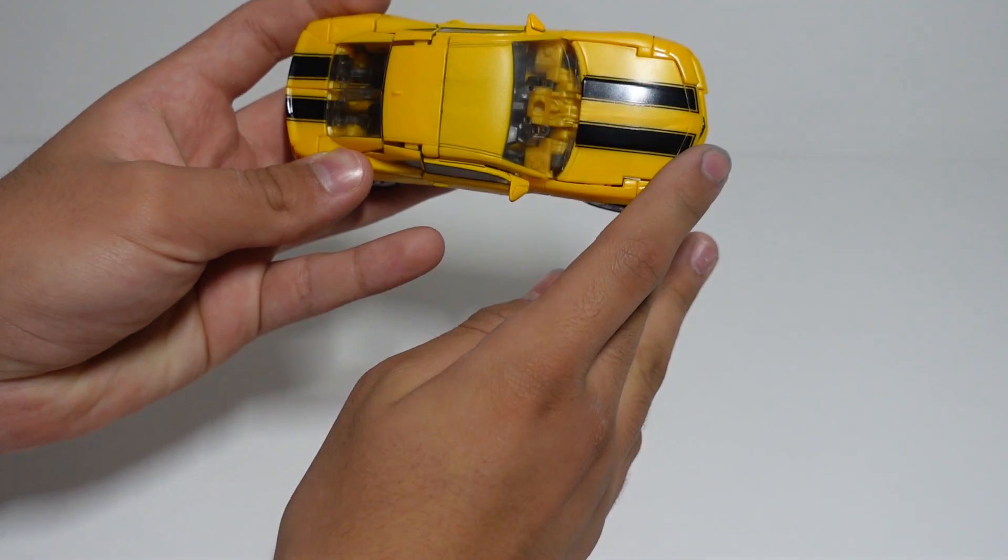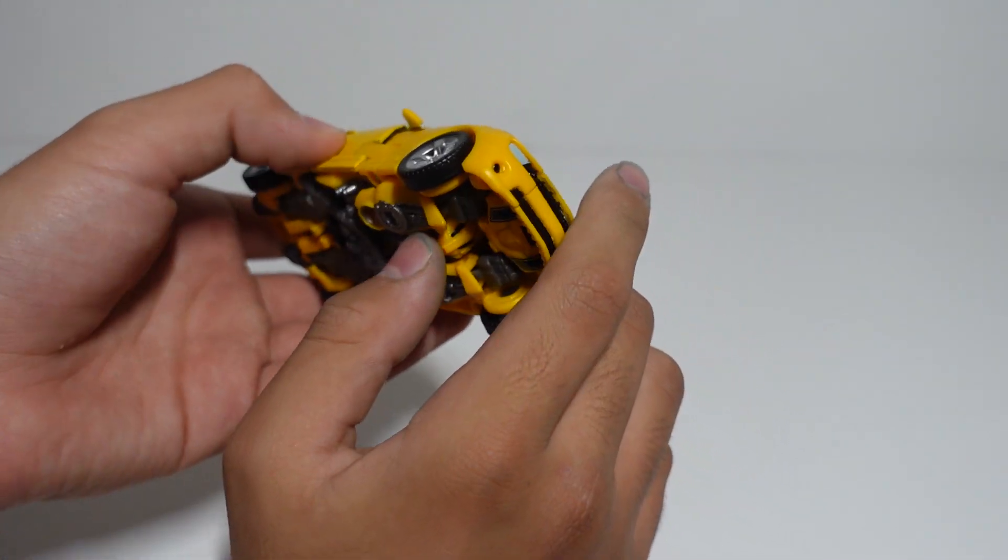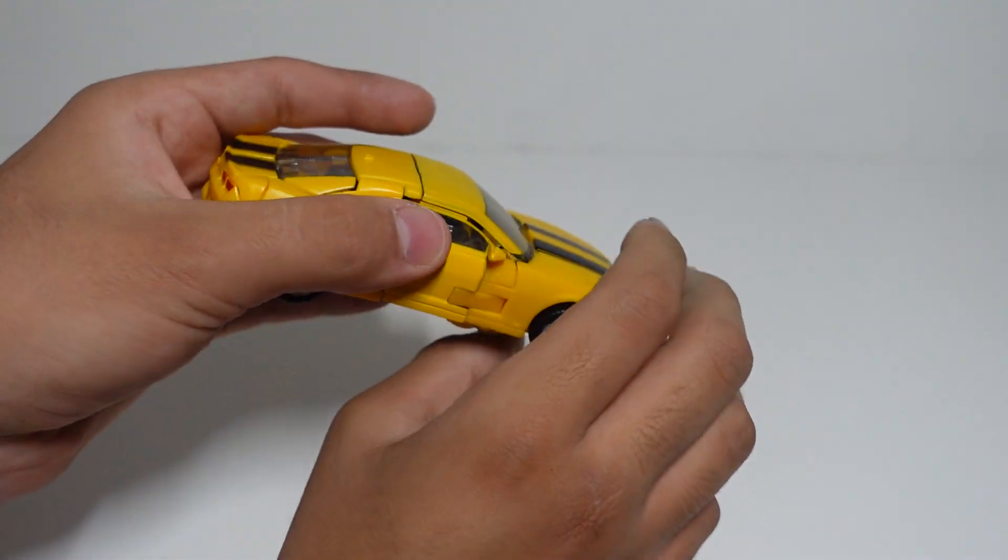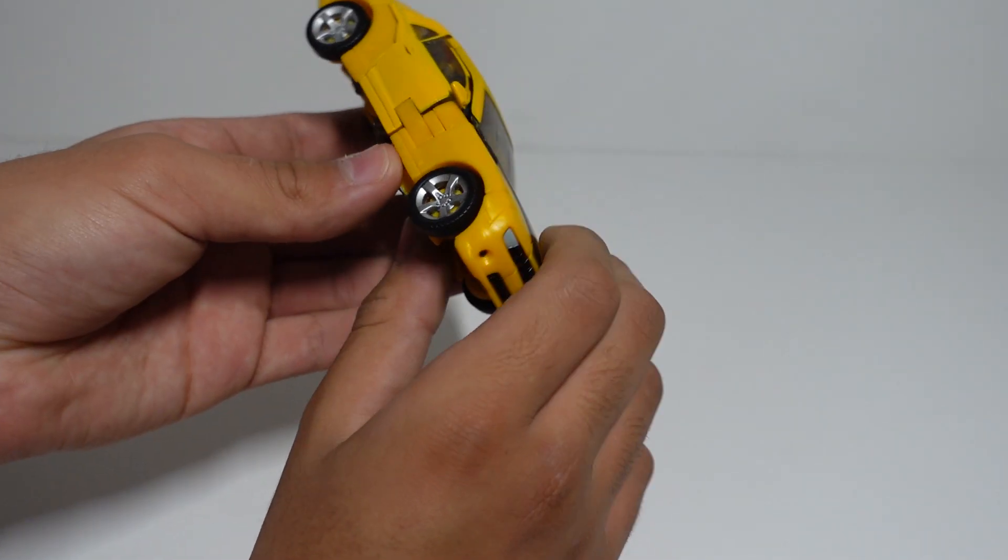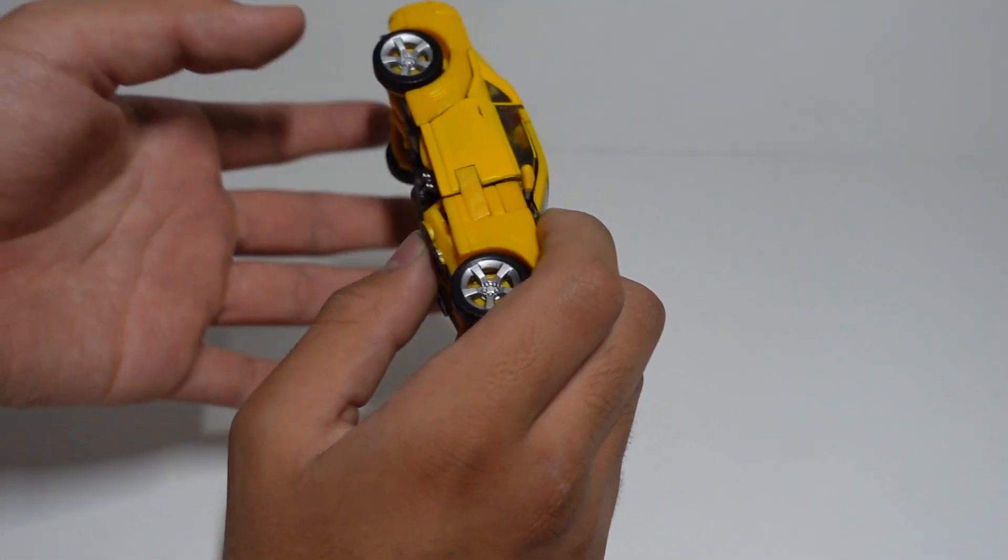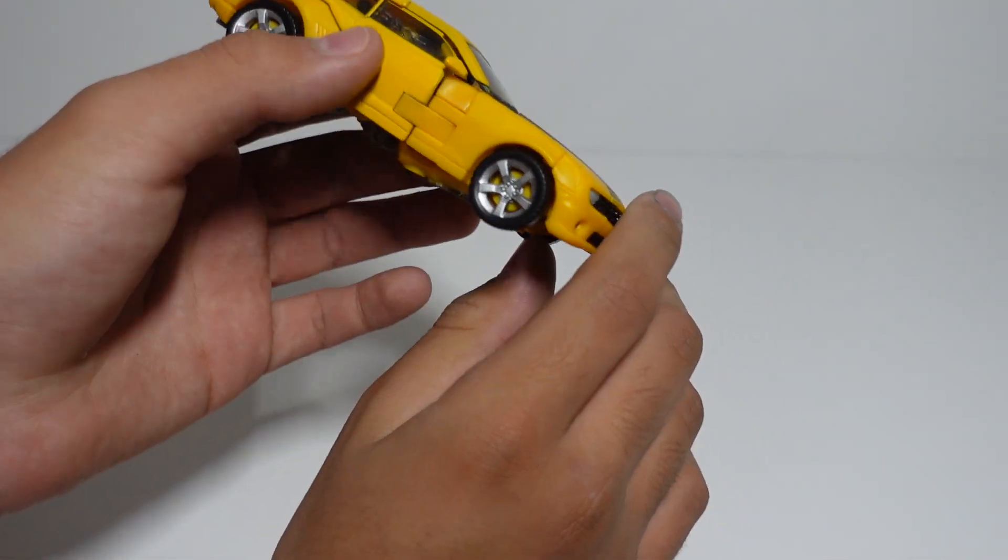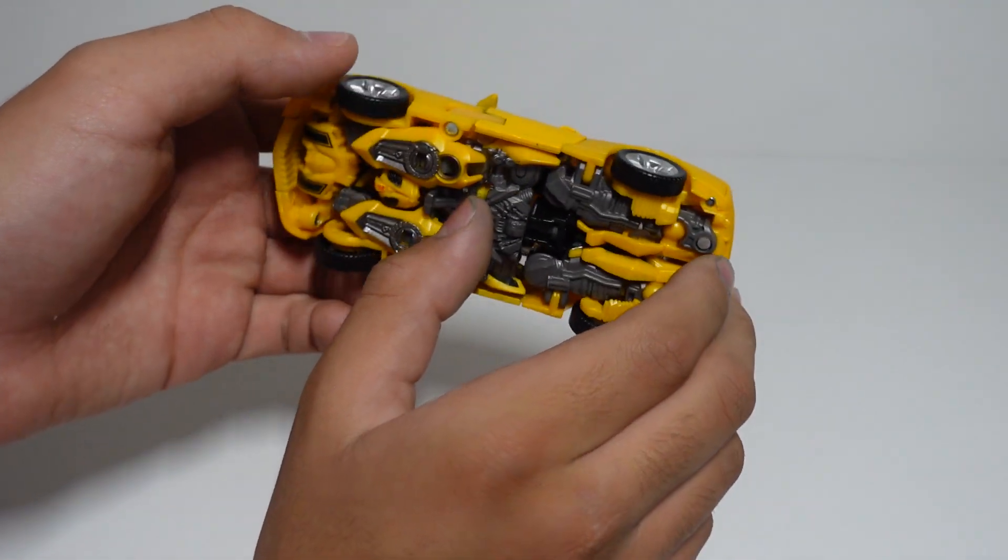From the top, Bumblebee looks pretty cool, but what I really am disappointed is that the Studio Series don't really have the seats in the inside. I believe it would be pretty cool if they had the seats inside and everything. But other than that, he's a pretty good figure. I give him a 5 out of 5 stars.